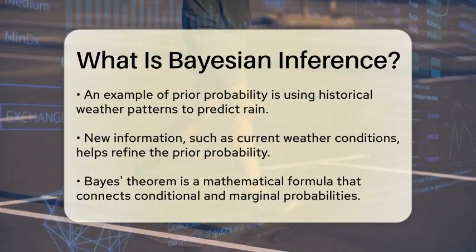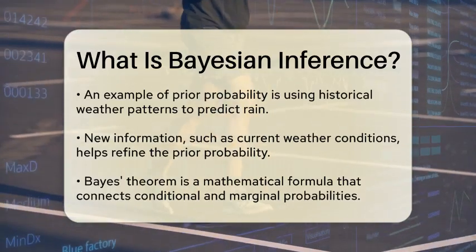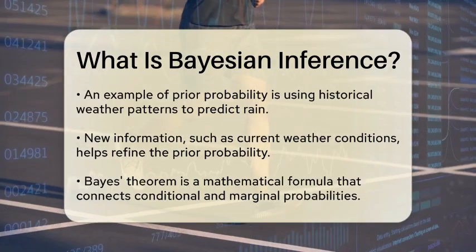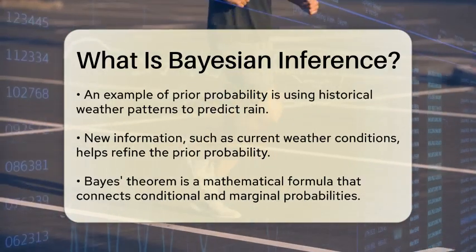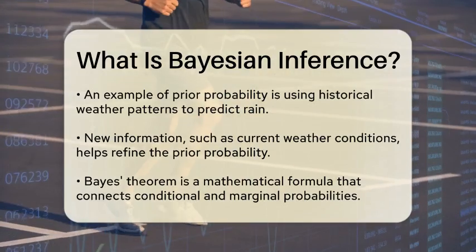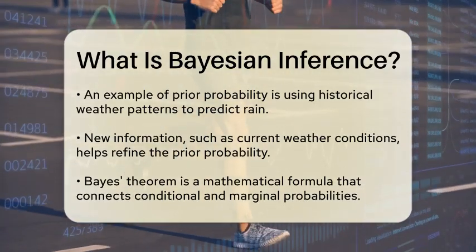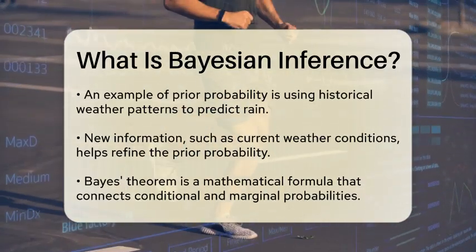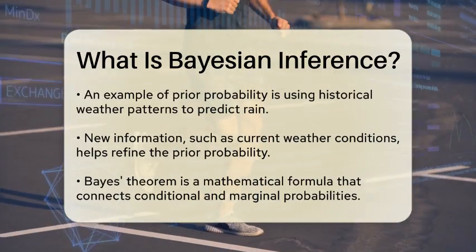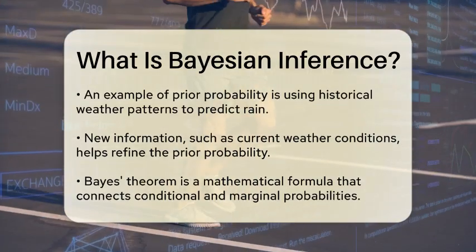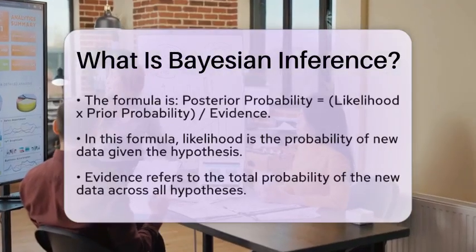The prior probability reflects what is known about a situation before observing new data. For example, if you are trying to determine whether it will rain tomorrow, your prior might be based on historical weather patterns for that time of year. Once you gather new information, such as current weather conditions or forecasts, you apply Bayes' theorem to update your belief about the likelihood of rain.